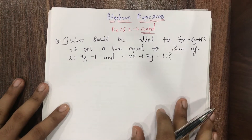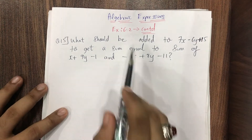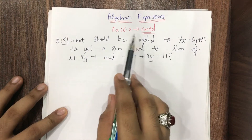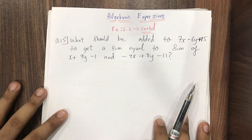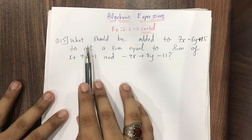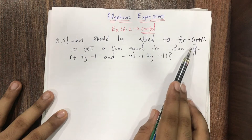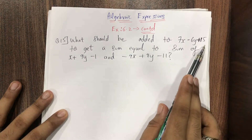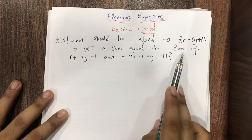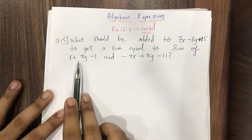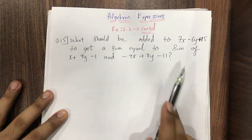Welcome students to our next lecture on algebraic expressions. Continuing exercise 6.2, question number 15 is in front of you. The question asks: what should be added to 7x minus 6y plus 15 to get a sum equal to the sum of (x plus 9y minus 1) and (minus 9x plus 8y minus 11)?